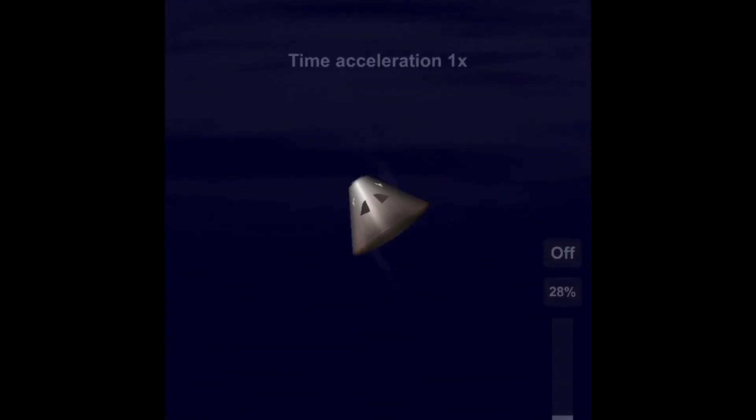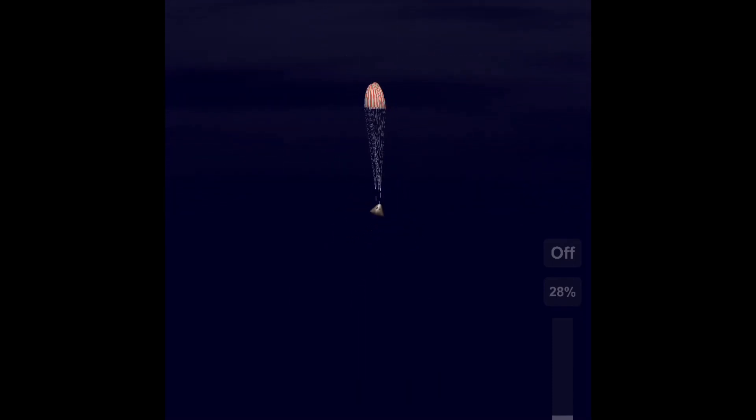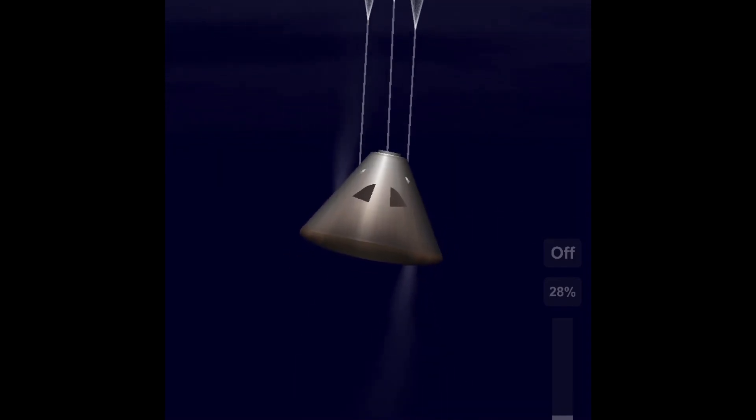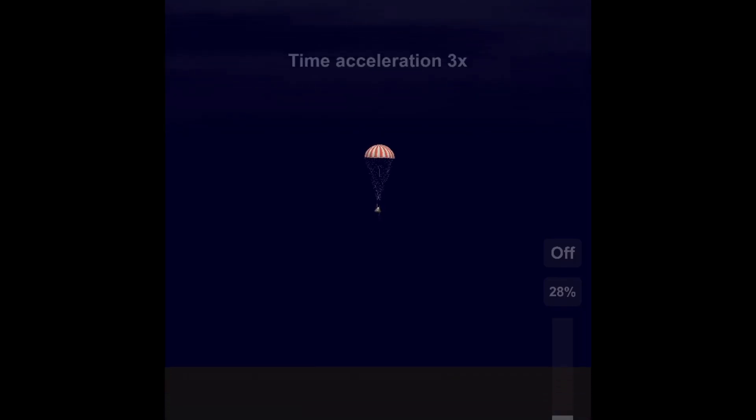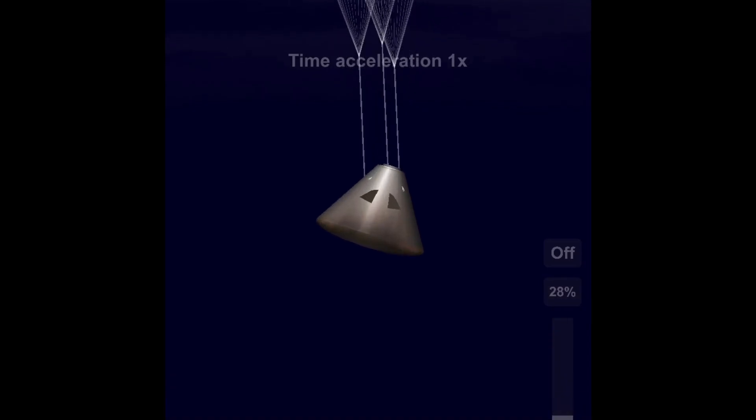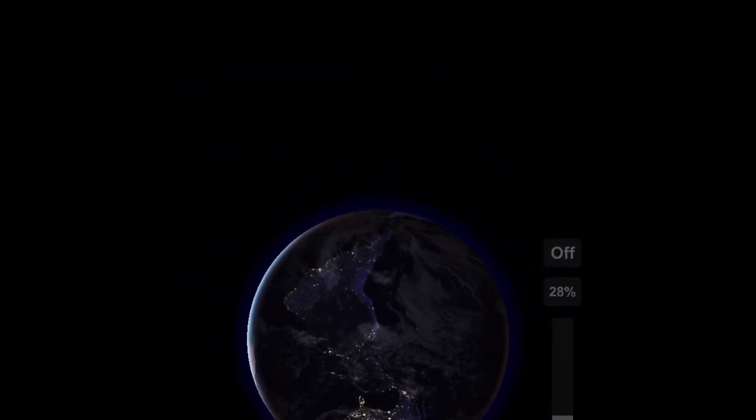But it doesn't matter because we're now landing. We have deployed the three parachutes and we are landing near Antarctica because, you know, that's probably the most isolated place on earth. Nobody will know this mission ever took place. So there we go. We have landed and that's the end of the video guys. I really hope you enjoyed.